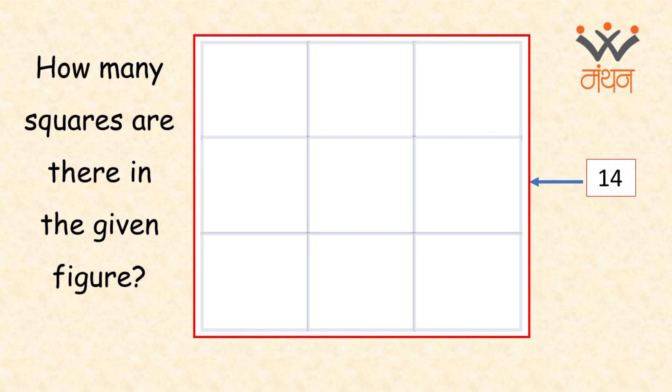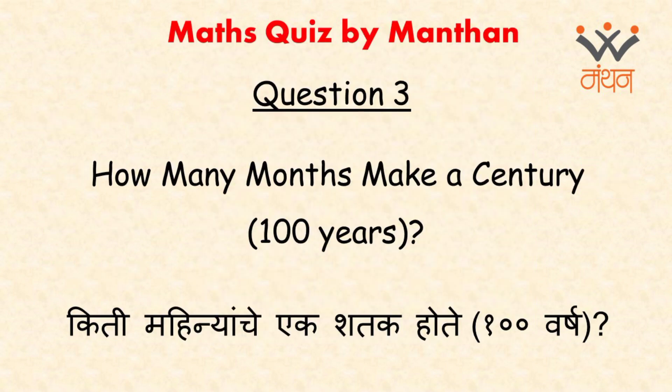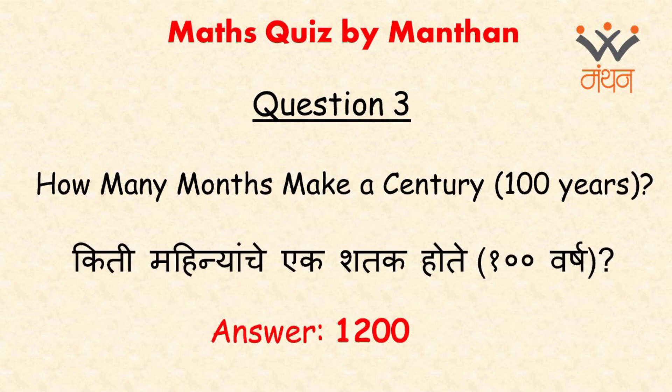Here is question number 3: how many months make a century, that is 100 years? The answer is 1200 months. The question just aims at confirming that you know the required facts of calculations regarding time.